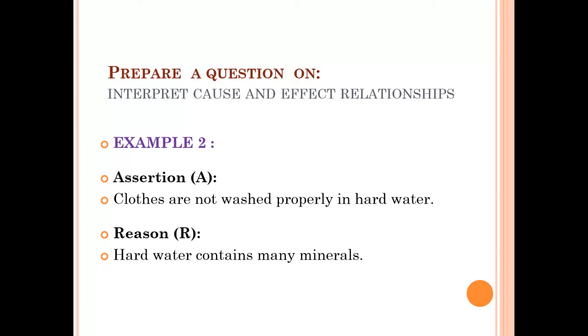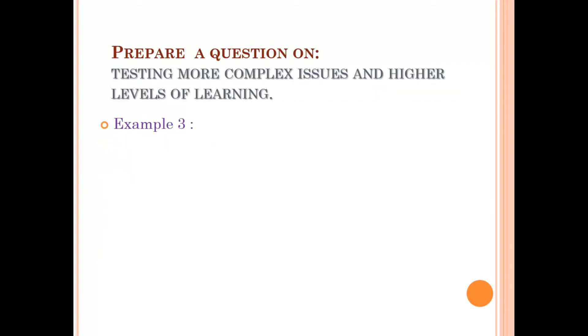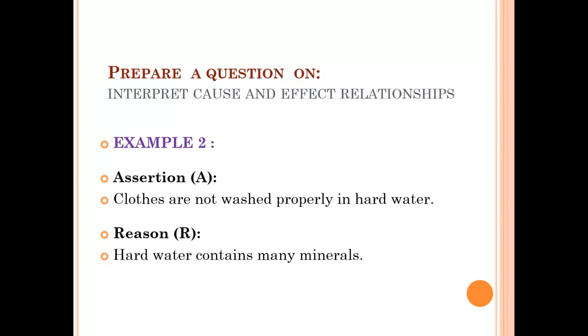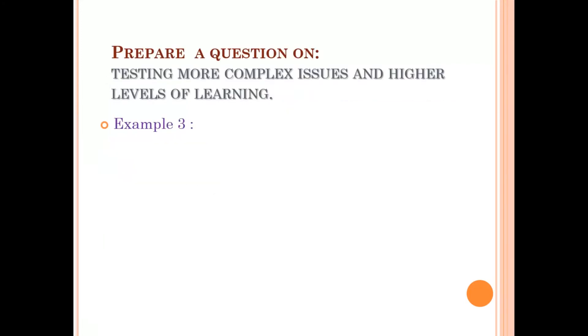Interpret cause and effect relationships. For example, the assertion: clothes are not washed properly in hard water. Reason: hard water contains many minerals. Here see, hard water contains many minerals due to which the foam won't form, so the cloth washing is not done properly.